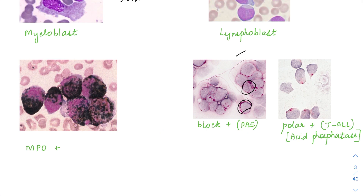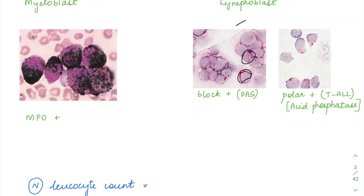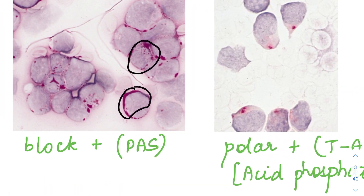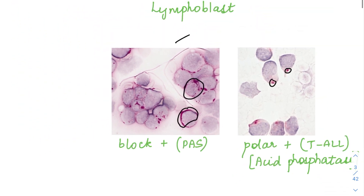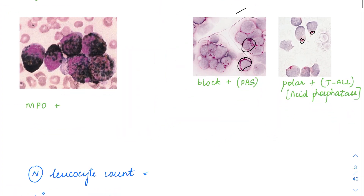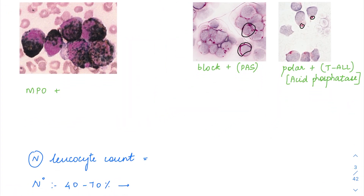The diffuse positivity in AML was seen in M6. The last image is the polar positivity, which we see in T-ALL. At one pole alone, you are going to have a dot-like positivity called polar positivity, seen in T-ALL. This polar positivity corresponds to the special stain acid phosphatase, and this acid phosphatase is going to be tartrate-sensitive.